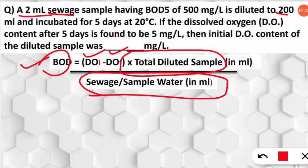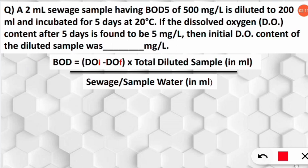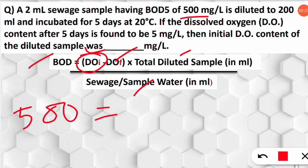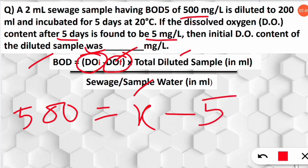The total diluted sample is 200 ml and the sewage water taken is 2 ml, so we divide by 2. We need to find the initial DO, so we take it as X. Substituting: BOD5 is given as 500 mg/L, so we write 500 on the left-hand side. Initial DO is X mg/L, and dissolved oxygen final after 5 days is 5 mg/L.